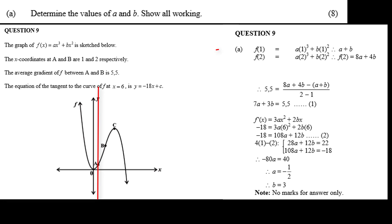From point a, f of 1 equals a times 1 cubed plus b times 1 squared, and that equals a plus b. And from point b, f of 2 equals 2 cubed plus b times 2 squared equals 8a plus 4b.